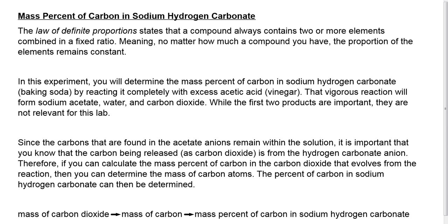Then you can determine the mass of carbon atoms, and the percent of carbon in sodium hydrogen carbonate can be determined. If I have the mass of the carbon dioxide that gets evolved from the reaction, then I can determine the mass of carbon using the percent composition of carbon dioxide. Once I have the mass of carbon, I can determine the mass percent of carbon in the sodium hydrogen carbonate, because the carbon in the carbon dioxide is that same carbon that's in the sodium hydrogen carbonate — which is the focus of the lab.